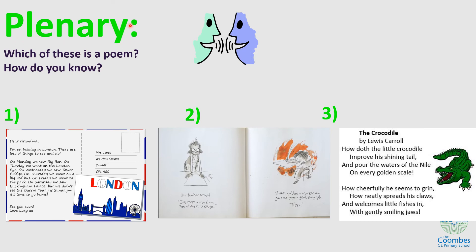Finally, we move on to our plenary for today's lesson. I have got three different texts here — one, two and three. I would like you to look very carefully at each one, read them if you can, and have a discussion with your grown up about which of these is a poem and how do you know. Thinking about the features of a poem we've gone through today, justify your answer using those features. For example, you could say 'I know that number two is a poem because it has a title' — that's just an example, not necessarily the right answer. Pause the video to discuss.